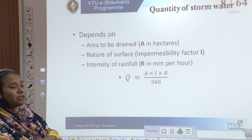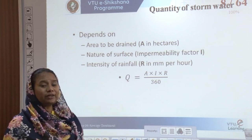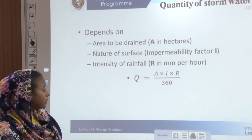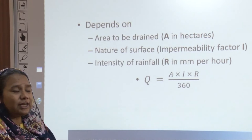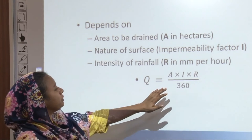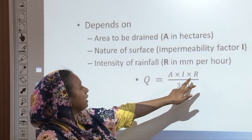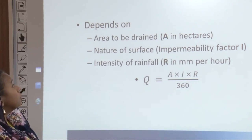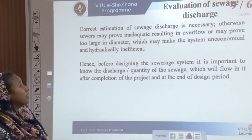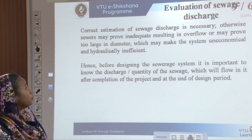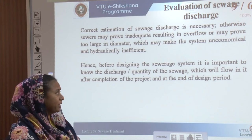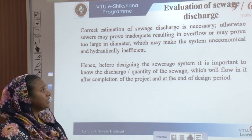Quantification is totally dependent on the area to be drained (A, in hectares), the impermeability factor of the surface (I), and the intensity of rainfall (R, in mm per hour). The quantification formula is Q = A × I × R / 360. A correct estimation of sewage discharge is necessary; otherwise sewage may prove inadequate due to overflow, or too large in diameter, making the system uneconomical and hydraulically inefficient.